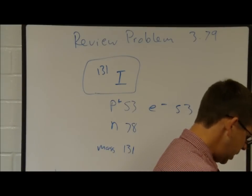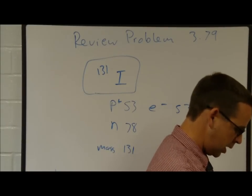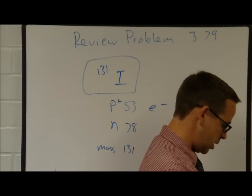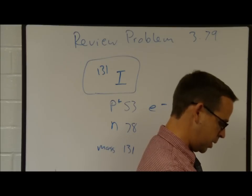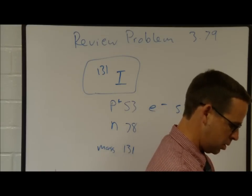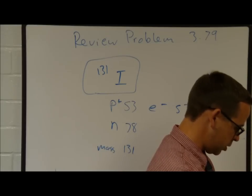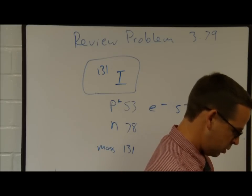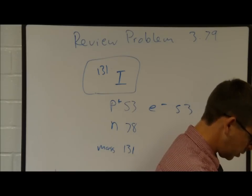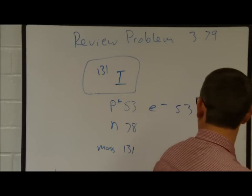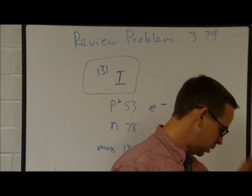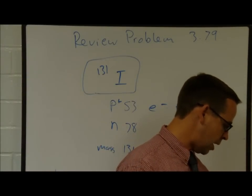The 130.9061 is the average mass of iodine-131. Iodine-131 means it has that described mass. So: 53 protons, 53 electrons, 78 neutrons.